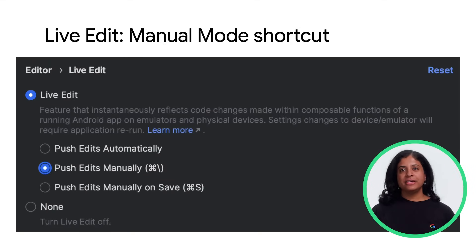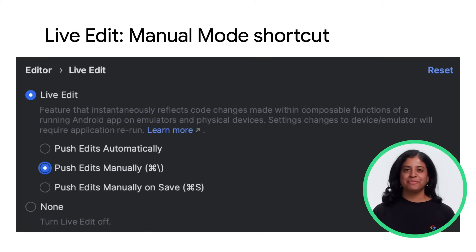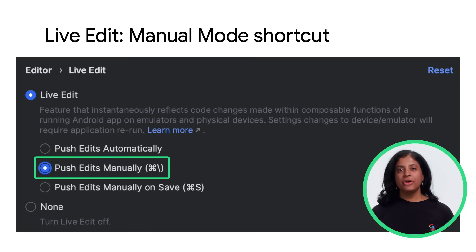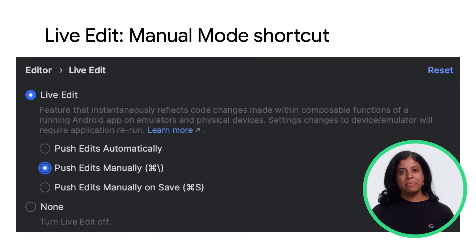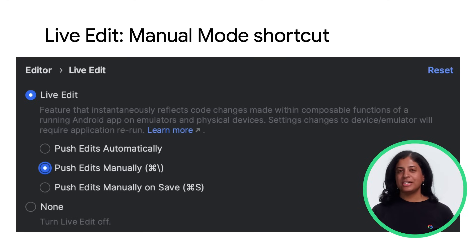LiveEdit lets you update composables in Android emulators and physical devices in near real time. LiveEdit has a default shortcut for manual mode: Control+Slash, or Command+Slash for macOS. Manual mode is helpful in situations when you want to have precise control over when updates are deployed to the running application. For more information, check out our video on LiveEdit.